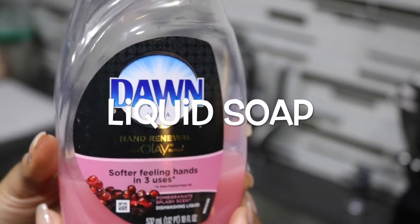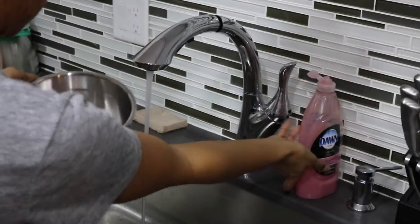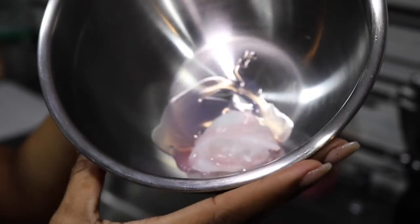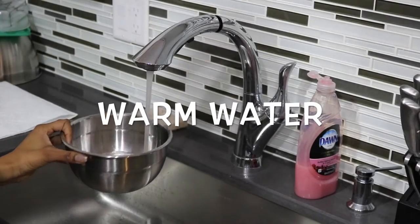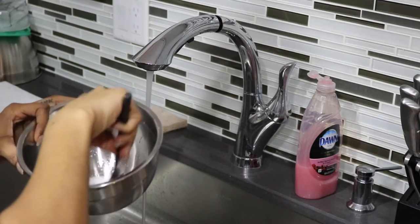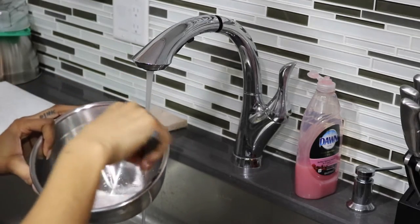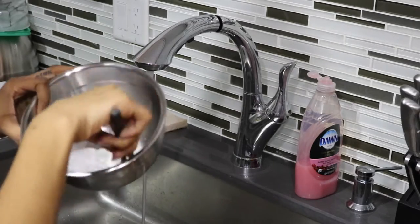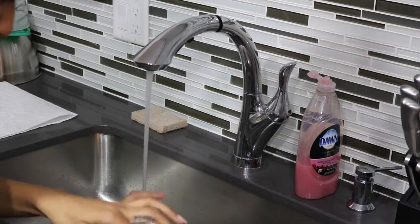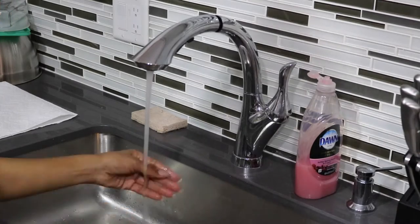Once you get everything into a bowl, you're going to mix it together to have a liquid consistency so you can dip your makeup brushes and sponges. Once it's all mixed, go ahead and grab your dirty makeup brush or sponge.